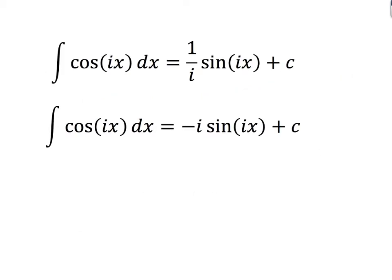We might have an expected result if these functions behave like normal functions. For cos(ix), we might expect it to integrate to one over i times sin(ix), because cosine integrates to sine. If I differentiate (1/a)·sin(ax) it differentiates back to cos(ax), so I might expect that rule to hold. Dividing by i and multiplying top and bottom by i gives minus i on the bottom, so the integral of cos(ix) should equal minus i·sin(ix) plus c.